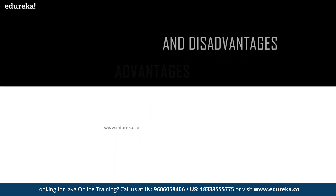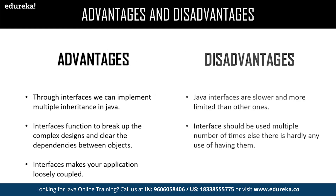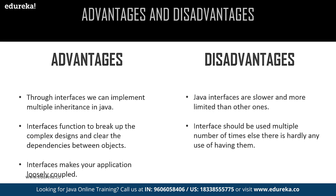Let us get into the major advantages and disadvantages of interface. Advantages: we can achieve multiple inheritance in Java, we can easily break up complexity and enable clear dependency between objects, and we can achieve loosely coupled applications through an interface. Disadvantages: Java interfaces make the application slower compared to competitors like Python which support multiple inheritance. Also, once an interface is included in an application, it might be used once in a while or end up being used multiple times at a larger scale.